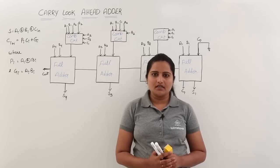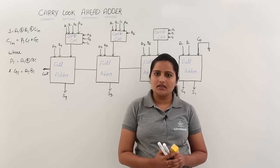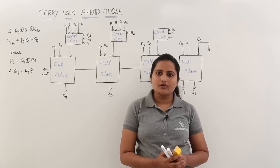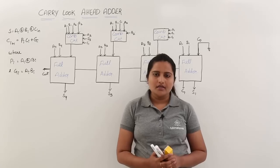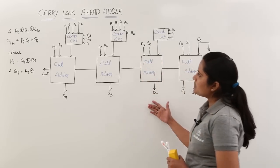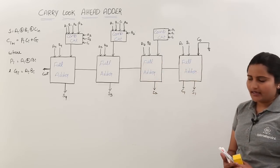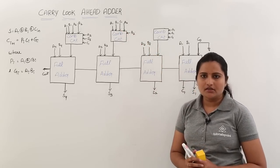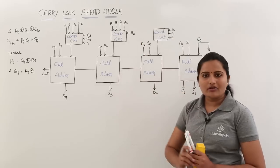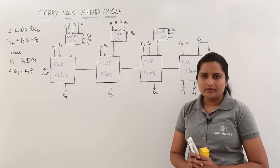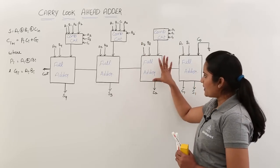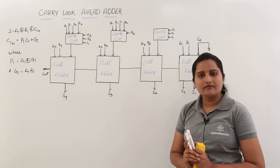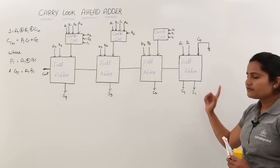Now we will see the procedure here — without using any carries from the previous full adder, we are going to avoid carry delay. This is the circuit for carry look ahead adder. Here you can see a combinational circuit for carry generation. This circuit always uses the first carry only, that is why there is no need for carries from previous adders. We are just using the first carry from the first adder.